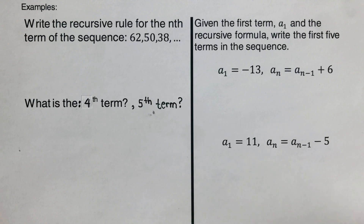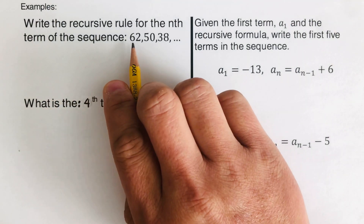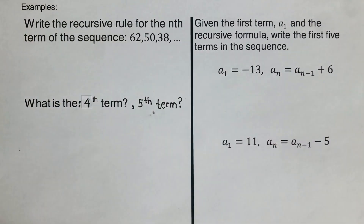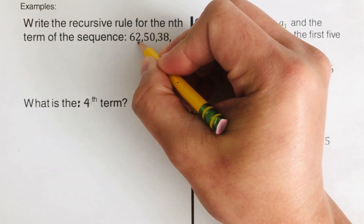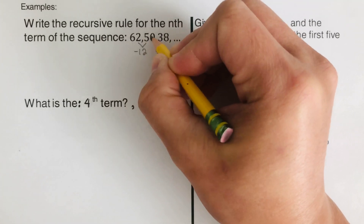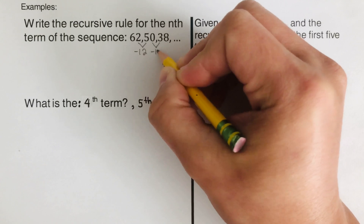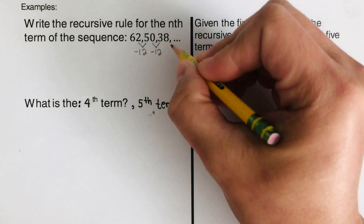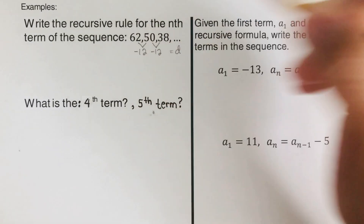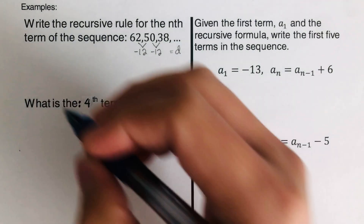Let's go over the next problem: write the recursive rule for the nth term of the sequence 62, 50, 38. By looking at this sequence, each term is subtracted by 12 — so the common difference is negative 12. 62 minus 12 is 50, and 50 minus 12 is 38. We label that common difference as d equals negative 12.